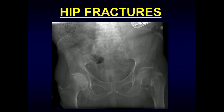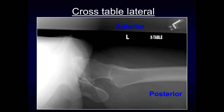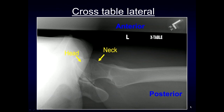Moving on to hip fractures — the mainstay is again the AP view of the pelvis. The key is to make sure you have an appropriately positioned AP view; ideally the hips should be internally rotated to nicely profile the femoral head-neck junction. Typically patients with fractures do not want to be in that position, so it can be limited. The cross-table lateral view is often obtained as well. Make sure the femoral head contour is normal, look at the femoral neck, the intertrochanteric region, and the ischial tuberosity helps identify which way is posterior.